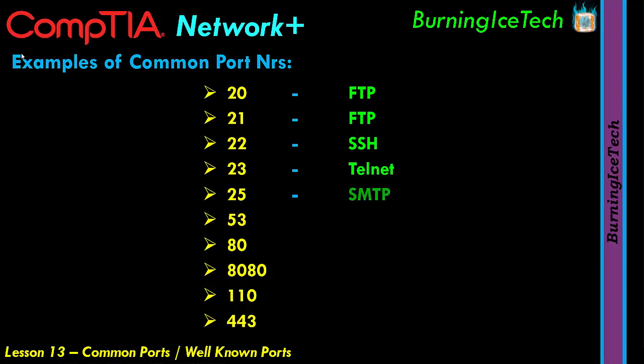Port 25 is SMTP — you can think of that as sending email, so it's the well-known port number for email sending. It's not the only one for email though. Port 53 is DNS — domain name service, or domain name server, depending on how you want to call it.